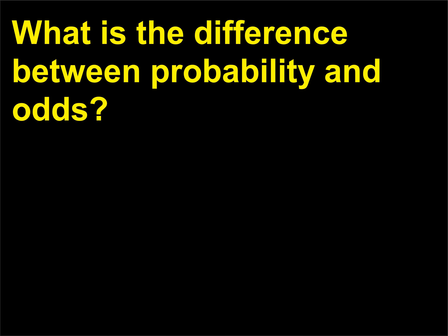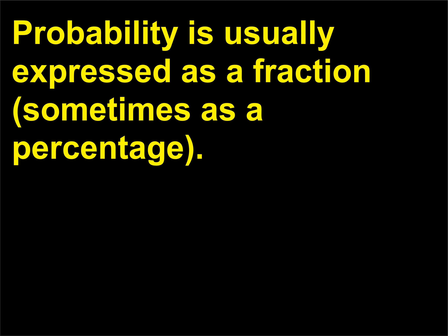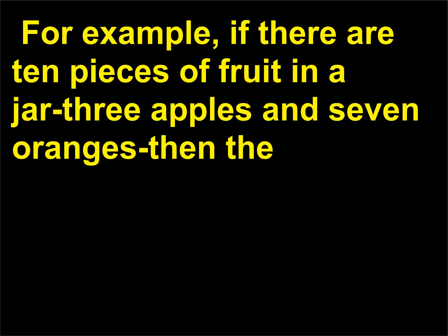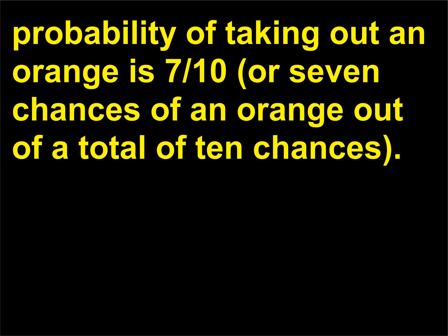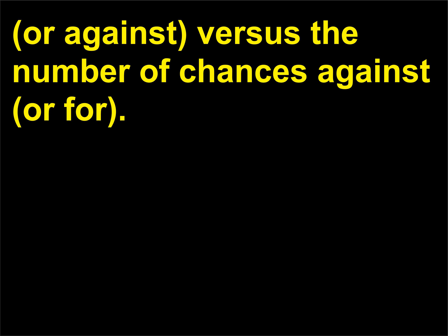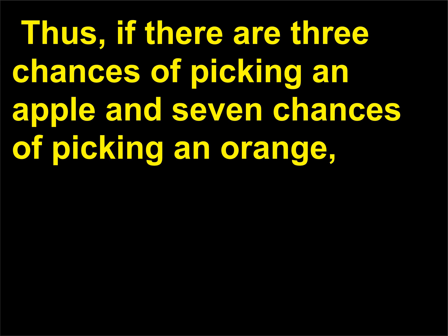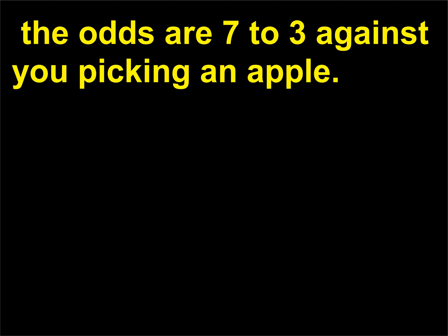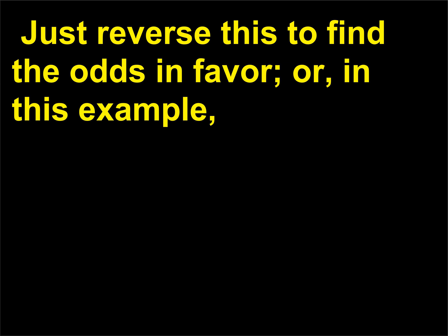What is the difference between probability and odds? Probability is usually expressed as a fraction, sometimes as a percentage. For example, if there are 10 pieces of fruit in a jar — 3 apples and 7 oranges — then the probability of taking out an orange is 7/10, or 7 chances of an orange out of a total of 10 chances. On the other hand, odds are expressed as the number of chances for versus the number of chances against. Thus, if there are 3 chances of picking an apple and 7 chances of picking an orange, the odds are 7 to 3 against you picking an apple.